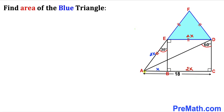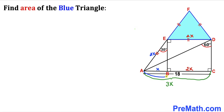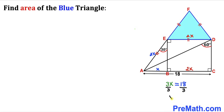Now let's make an observation. The whole length AC equals the sum of the individual lengths AB and BC. AB is X and BC is 2X, so X plus 2X gives us 3X. Furthermore, we know the whole length AC is 18, so we can set 3X equal to 18. Dividing both sides by 3 to isolate X, we find that X equals 6 units.